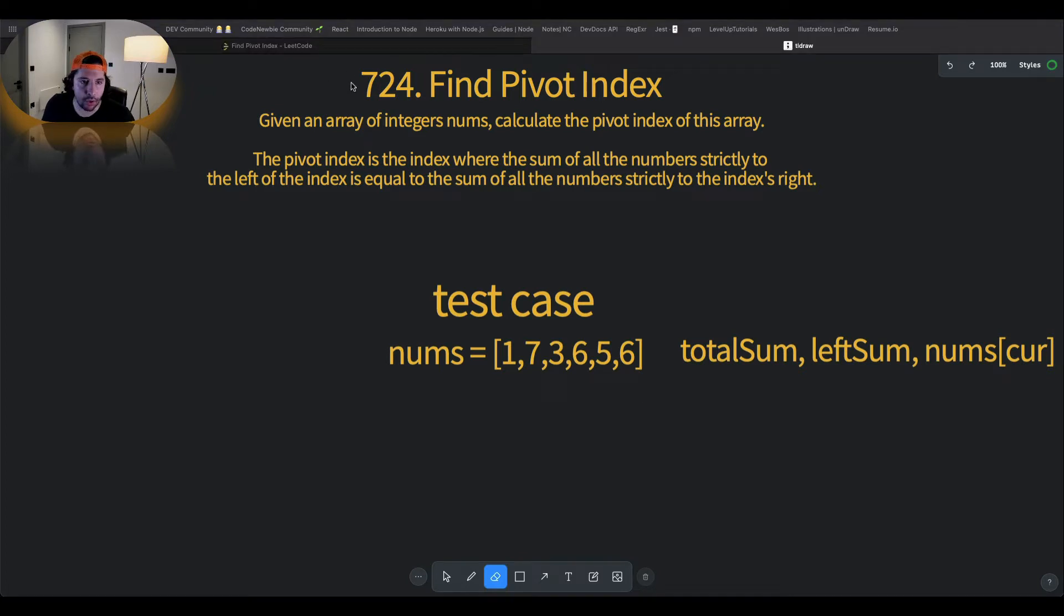There we are. So number 724, Find Pivot Index. The question states: given an array of integers nums, calculate the pivot index of this array. Now we need to just take a breather and think about the pivot index. According to LeetCode, the pivot index is the index where the sum of all numbers strictly to the left of the index is equal to the sum of the numbers strictly to the index's right.